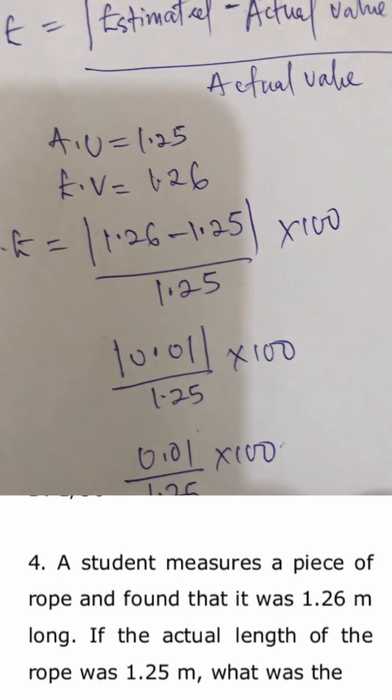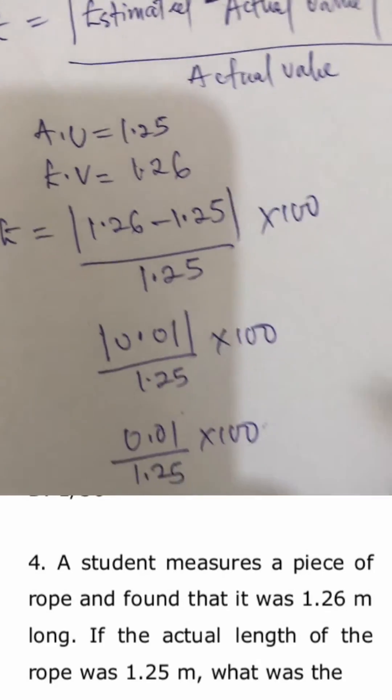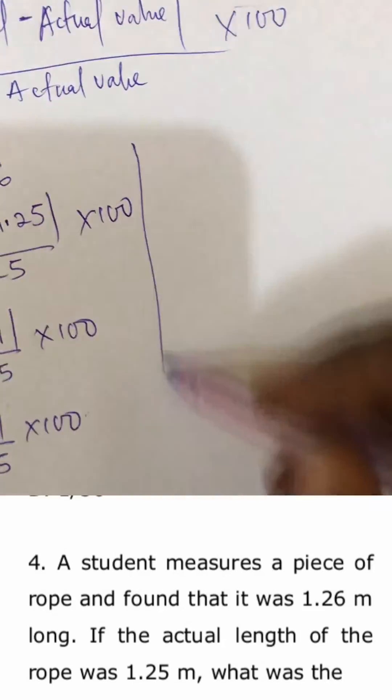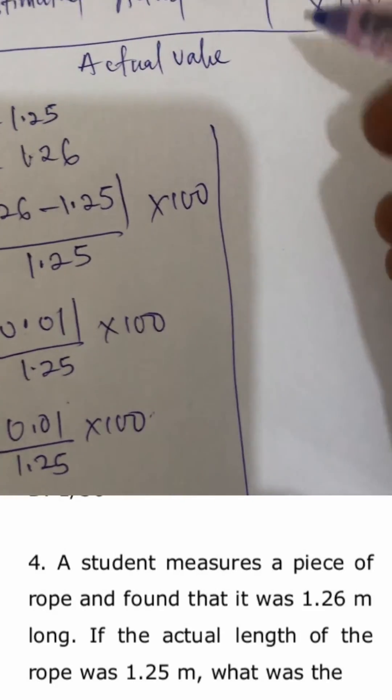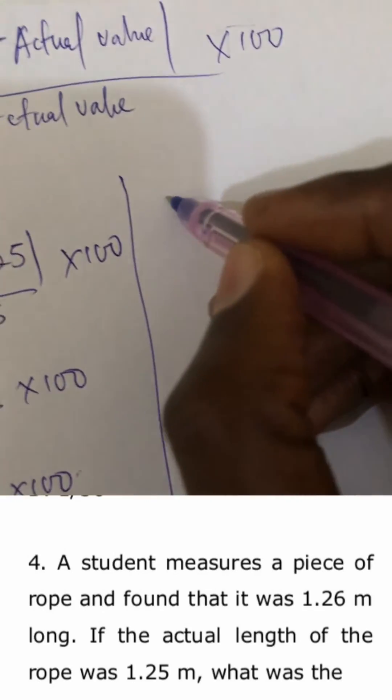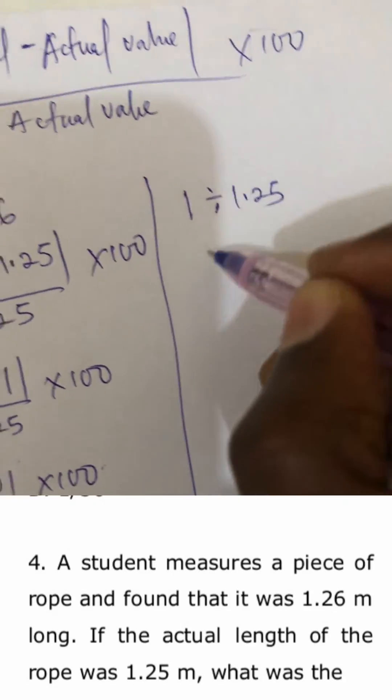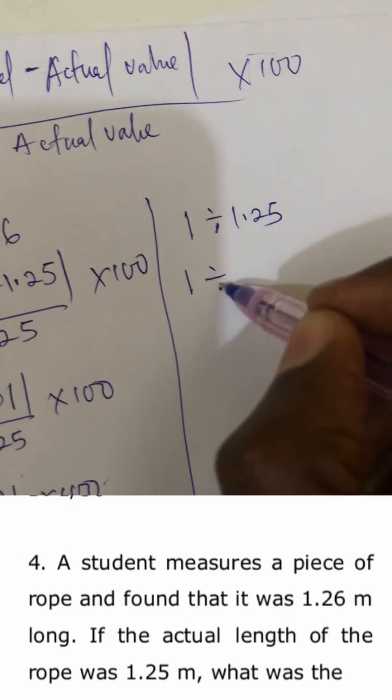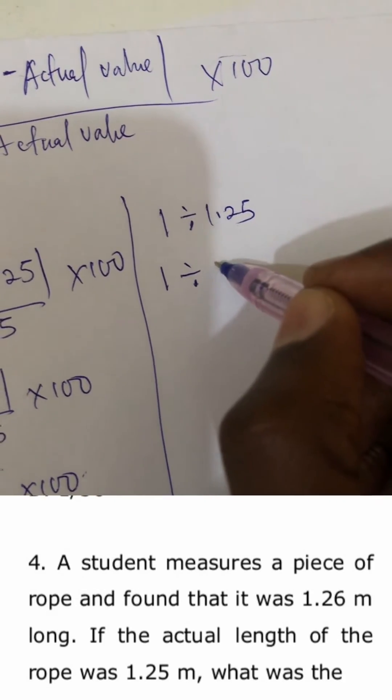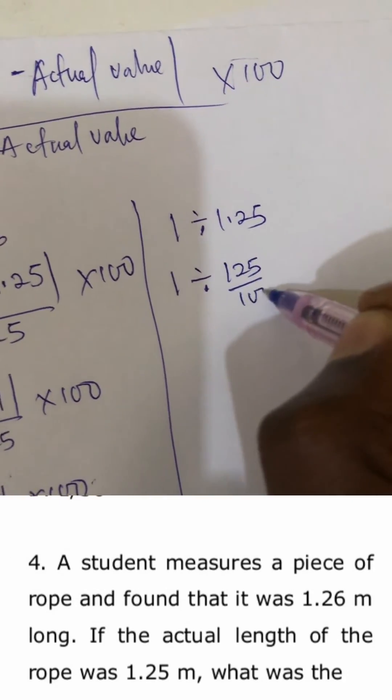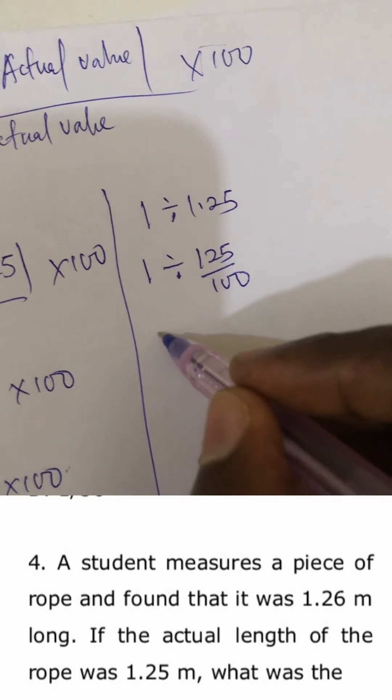Solving this, 1 over 1.25 shows that we have 1 divided by 1.25. Here we have 1 divided by 1.25 can be expressed as 1 over 125 over 100.